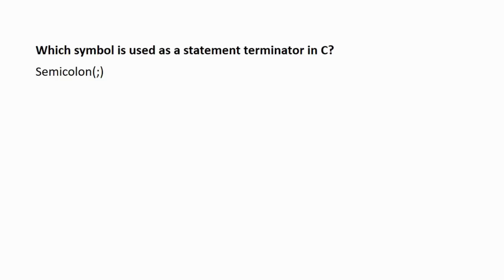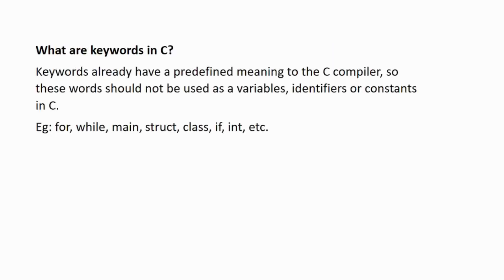Next question: which symbol is used as a statement terminator in C? The semicolon is the symbol used as a statement terminator in C. That means after each statement is written, we must use a semicolon at the end. Otherwise there will be an error, as the statement will never be terminated without it.